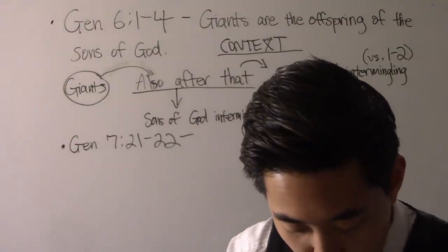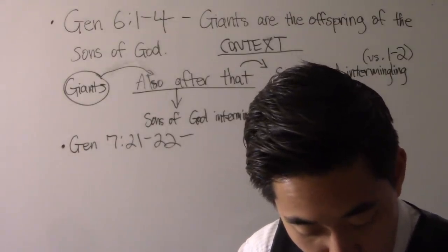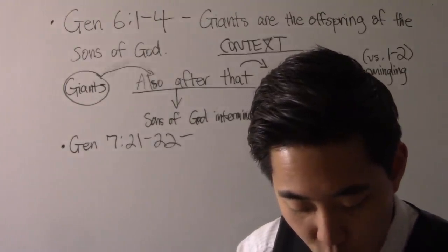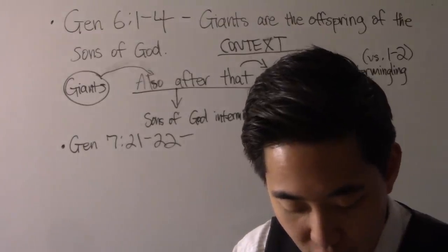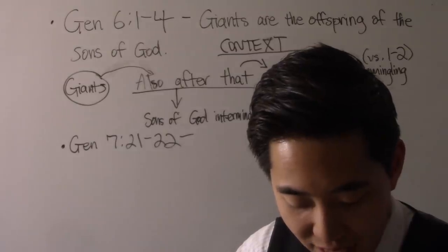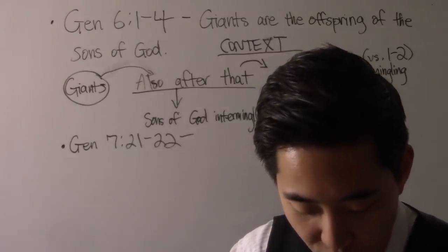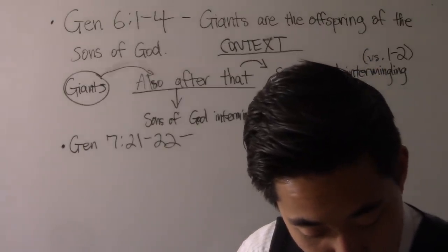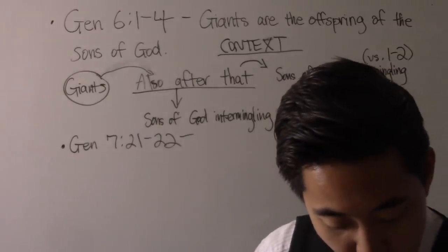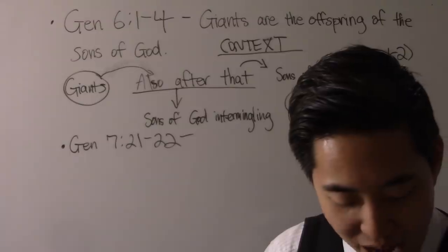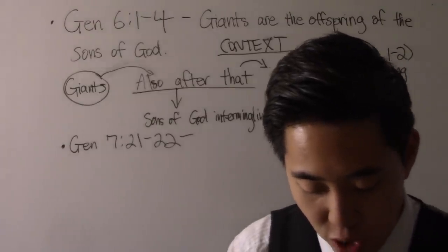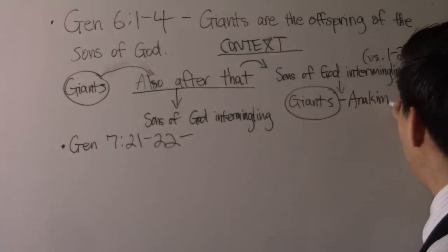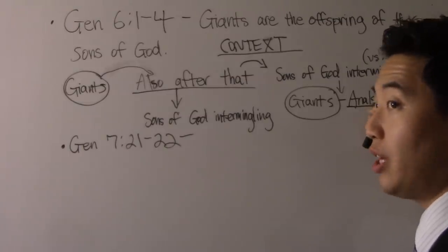Look at Deuteronomy. Notice at chapter 2 verse 20, that also was accounted a land of giants. Giants dwelt therein in old time, and the Ammonites called them Zamzumims, a people great and many and tall as the Anakims. But the Lord destroyed them before them. Also look at chapter 2 verse 10, the Emims dwelt therein time past, a people great, many and tall as the Anakims. So we see right here there's this group of giants called Anakims. Remember these guys, these bad boys are going to come out pretty important.